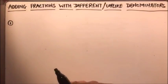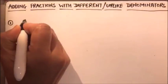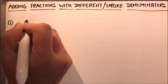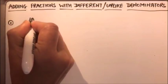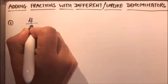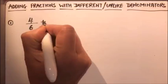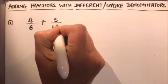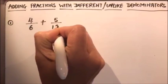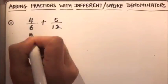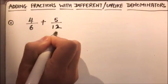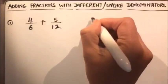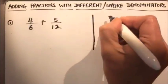Let's get started. Suppose we have two fractions: four over six, and we need to add this with another fraction which is five over twelve. Here the denominators are not equal — they are different, they are unlike. The denominators are six and twelve.